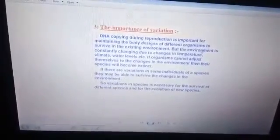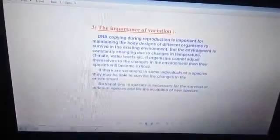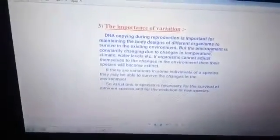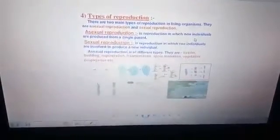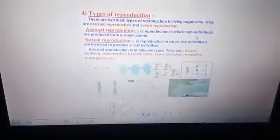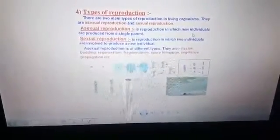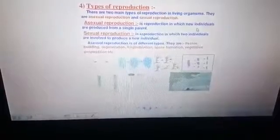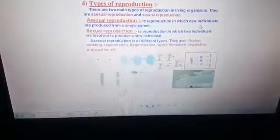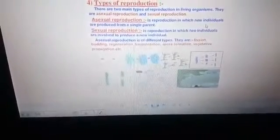Next comes the types of reproduction. Generally, there are two main types of reproduction in living organisms: one is asexual reproduction, and the second is sexual reproduction. During asexual reproduction, new individuals are produced from a single parent, for example, amoeba, paramecium, and bacteria.